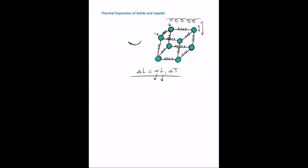With increasing temperature, the spring will stretch and this will lead to thermal expansion. The increasing length is given by an equation where alpha is the coefficient of expansion of the material, Li is the initial length, and delta T is the change in temperature. Thermal expansion is why railroad tracks and bridges include thermal expansion joints to compensate for expansion in the summer.